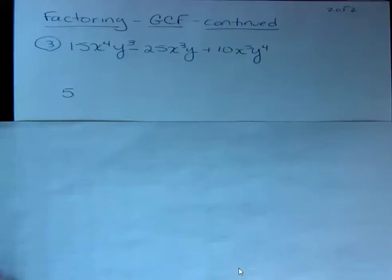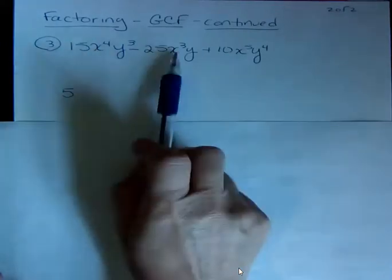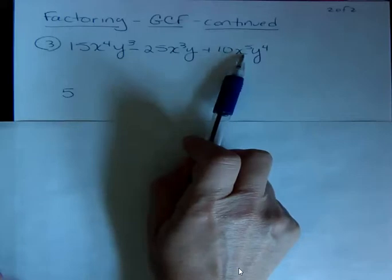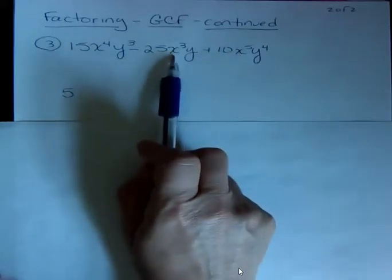And then I'm also going to have to think about the x's. Well, when I look at the x's, I have 4, 3, and 5. The least amount I have anywhere is right here. I've got three x's here. So I'm going to need to take x to the third power out. I can't take any more than the smallest one.